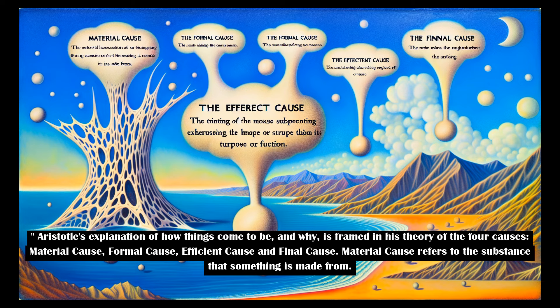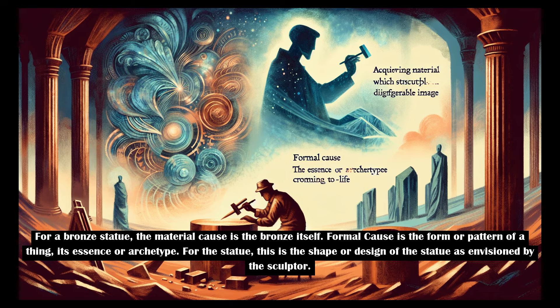Material cause refers to the substance that something is made from. For a bronze statue, the material cause is the bronze itself. Formal cause is the form or pattern of a thing — its essence or archetype. For the statue, this is the shape or design of the statue as envisioned by the sculptor.